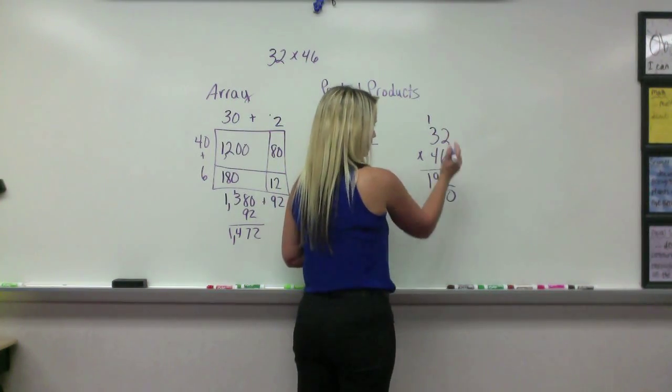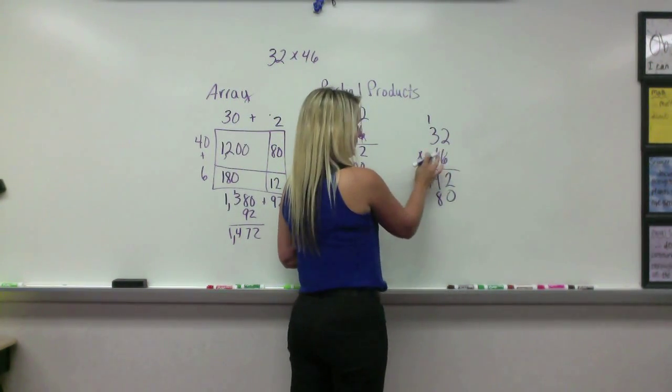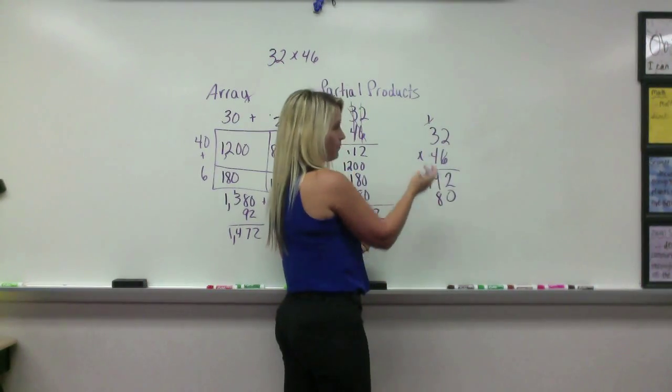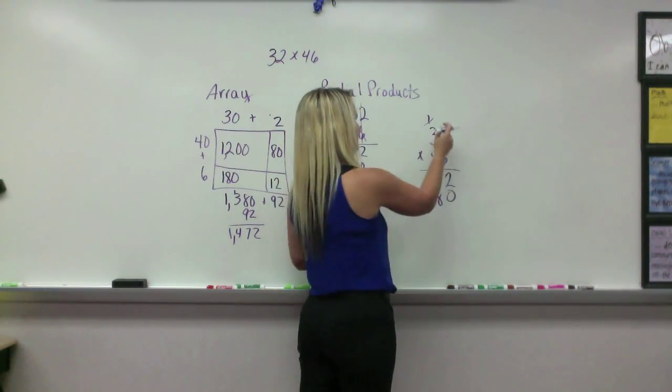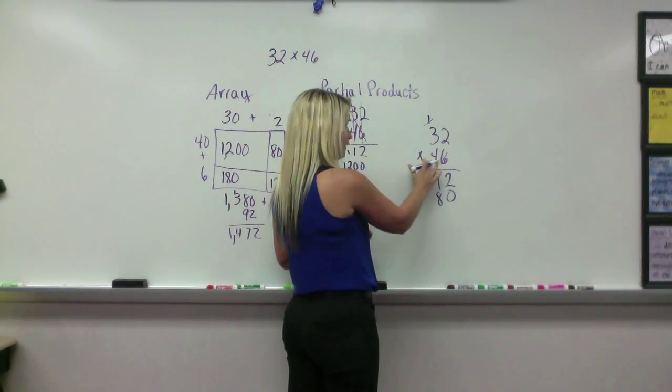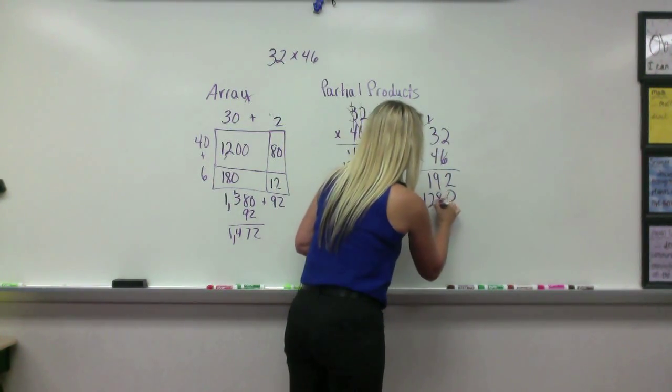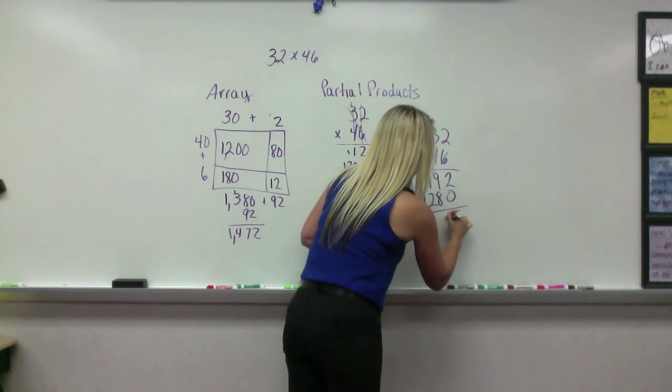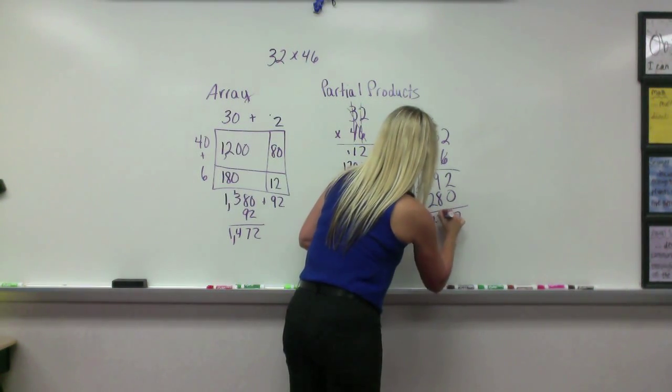So 4 times 2 is 8, and 4 times 3, and hopefully they've remembered that that part was from the regrouping of the 6. We did teach them to put the line through it. 4 times 3 is 12. I'm going to put that there. And we get our same answer.